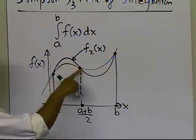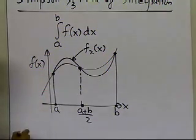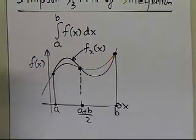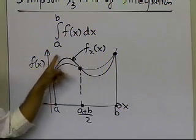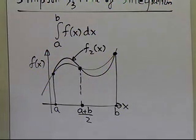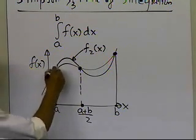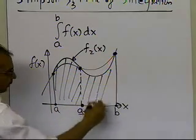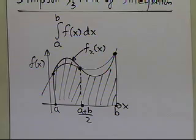The second-order polynomial goes through the values of the function at point A, at (A+B)/2, and at point B. Since we know how to integrate a second-order polynomial exactly, the result won't be exact but will give an approximate value of the integral. Let's see what formula we get when we do that.